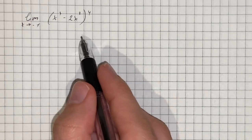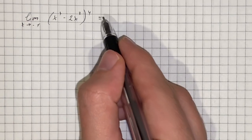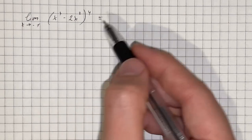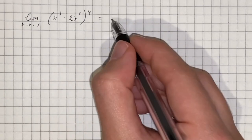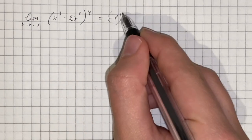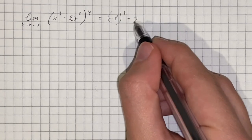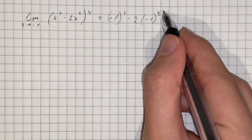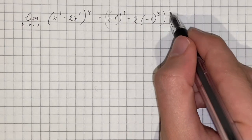We have to evaluate the given limit, and here we're going to directly apply limits. So we substitute x with negative 1 and we get negative 1 to the fourth power minus 2 times negative 1 cubed, and this whole thing to the power of 4.